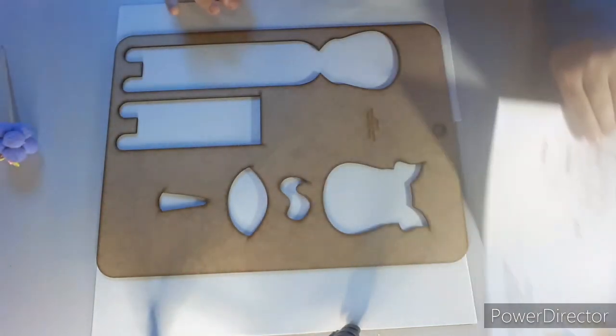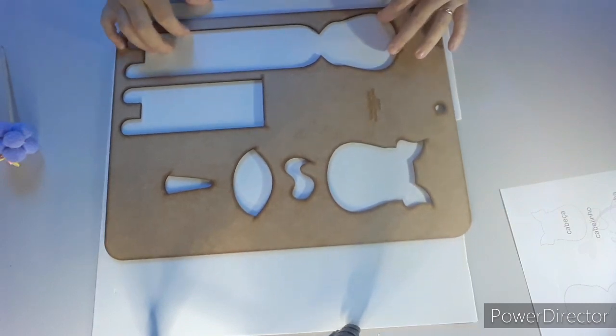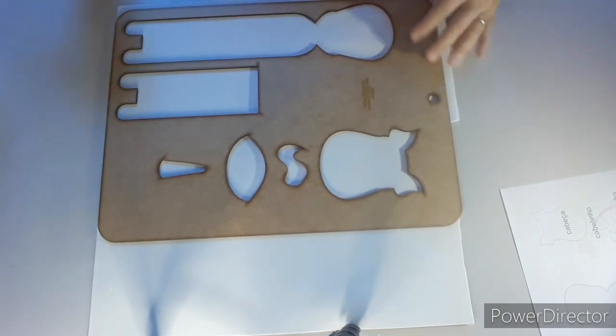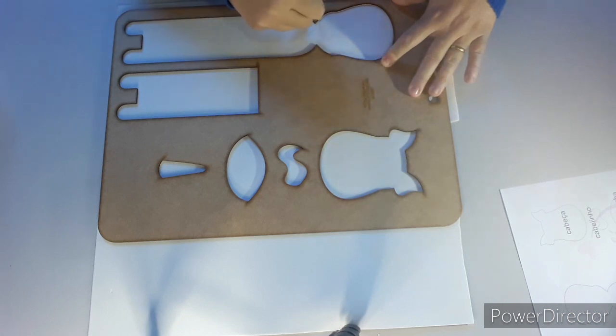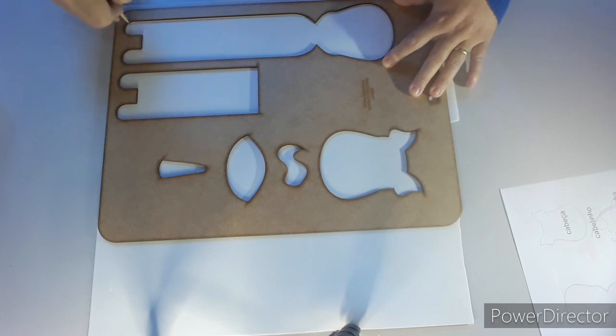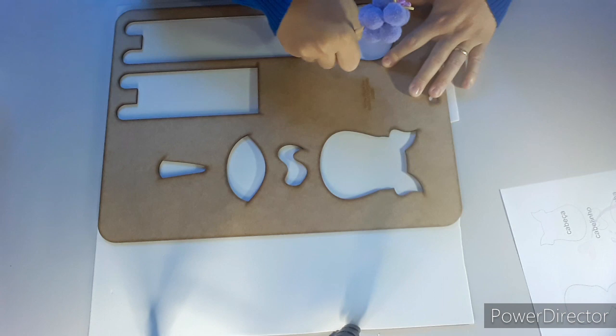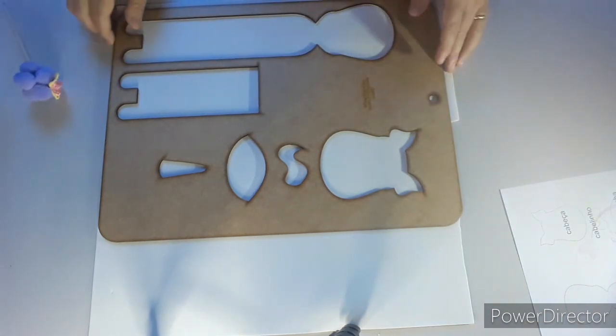Primeiro o que nós vamos fazer? Nós vamos pegar o gabarito, vamos centralizar na folha. Eu tô fazendo branco porque é um unicórnio, mas vocês podem fazer um cavalo, tudo com isso. Então nós vamos, com um palito de churrasco, nós vamos contornar pra fazer a parte dos dois. Contornou.